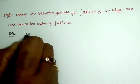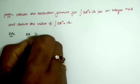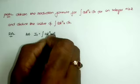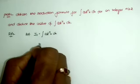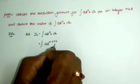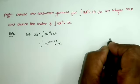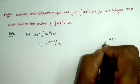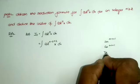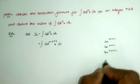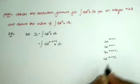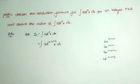Let I_n equal the integral of cot^n x dx. In the next step we write this as cot^(n-2+2) x dx. For sine and cos the processor was n-1+1, for tan the processor was n-2+2, and in the same manner for cot the processor is n-2+2. That is the first step to solve this question.